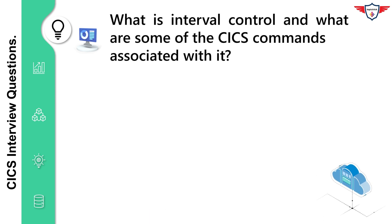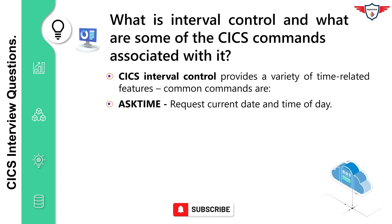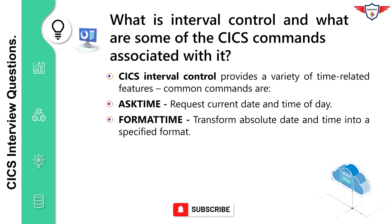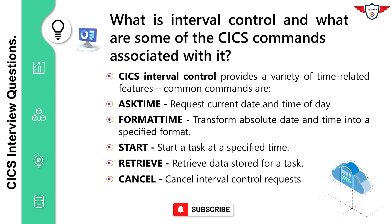What is interval control, and what are some of the CICS commands associated with it? CICS interval control provides a variety of time-related features: Ask Time command — request current date and time of day; Format Time command — transform absolute date and time into a specified format; Start command — start a task at a specified time; Retrieve command — retrieve data stored for a task; Cancel command — cancel interval control requests.